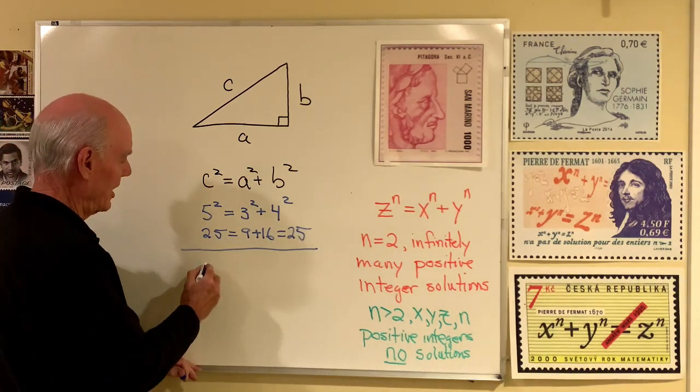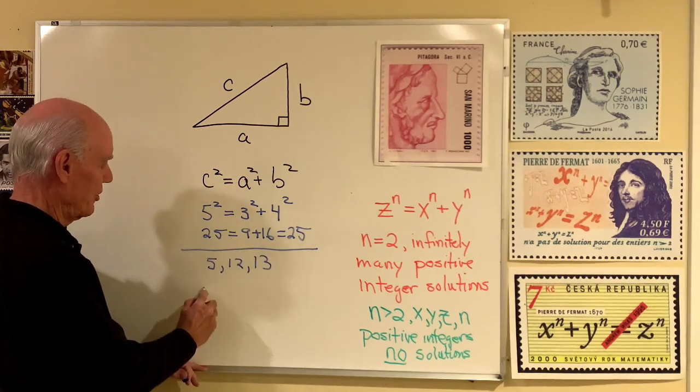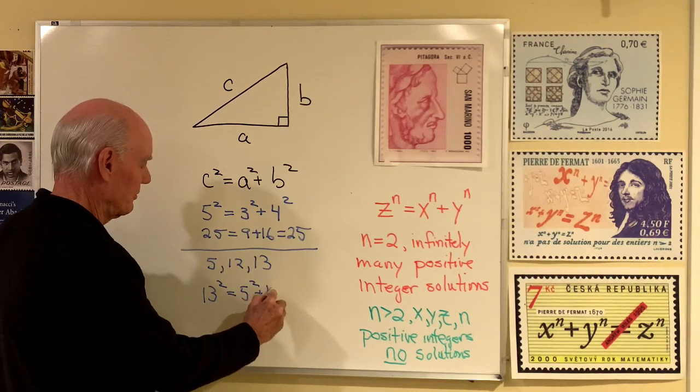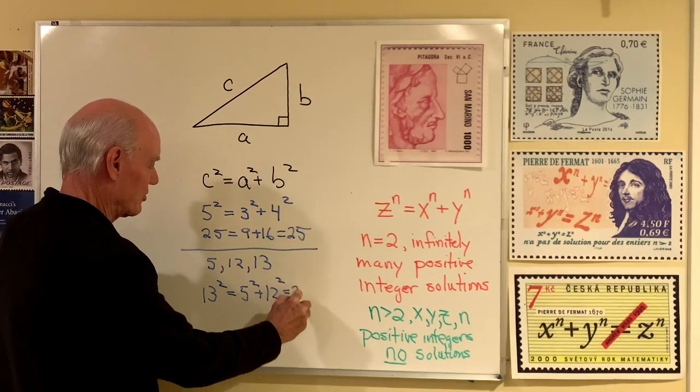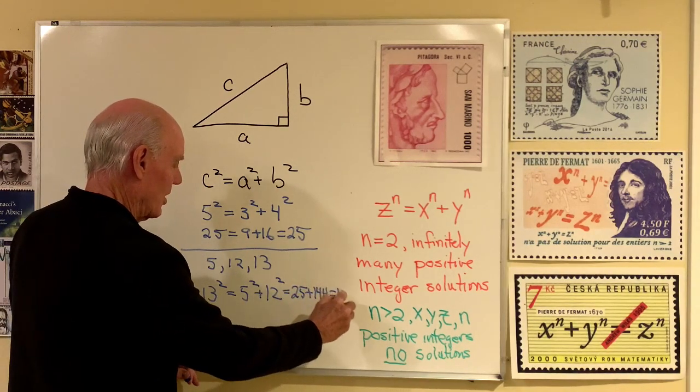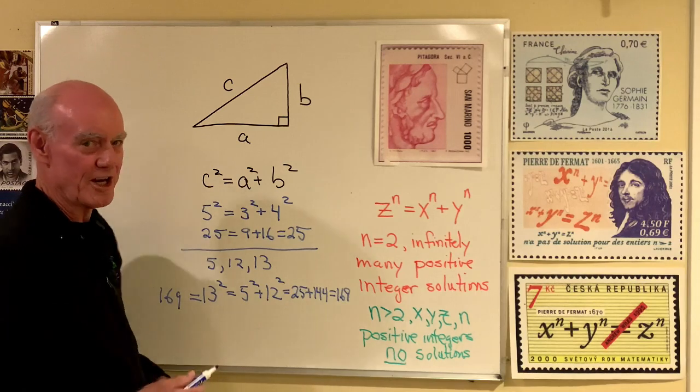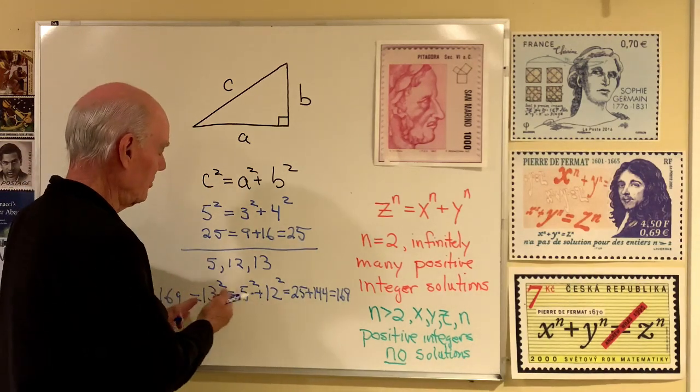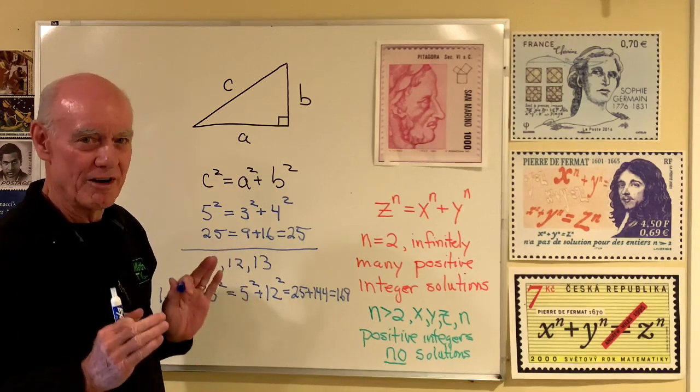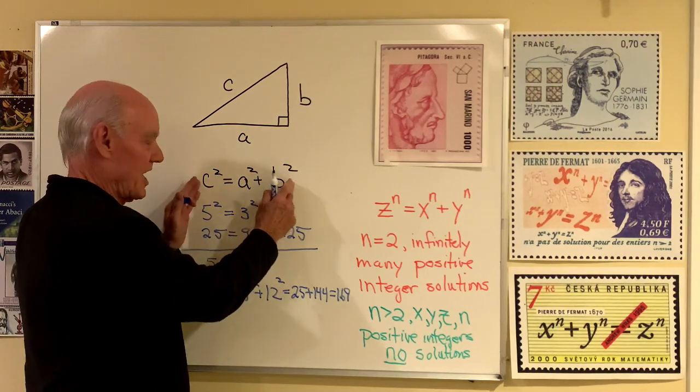Pythagorean triples are just interesting because they're easy to work. There's another one, 5, 12, 13. So 13 squared is equal to 5 squared plus 12 squared. That's 25 plus 144, which is 169. And over here, 13 squared, 169. So that's another Pythagorean triple. And any multiple of those three numbers forms another Pythagorean triple. So infinite number of Pythagorean triples, which are positive integers that satisfy this equation.